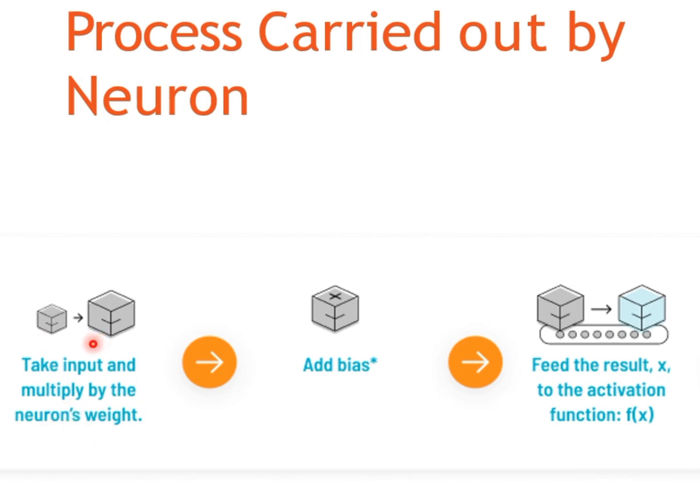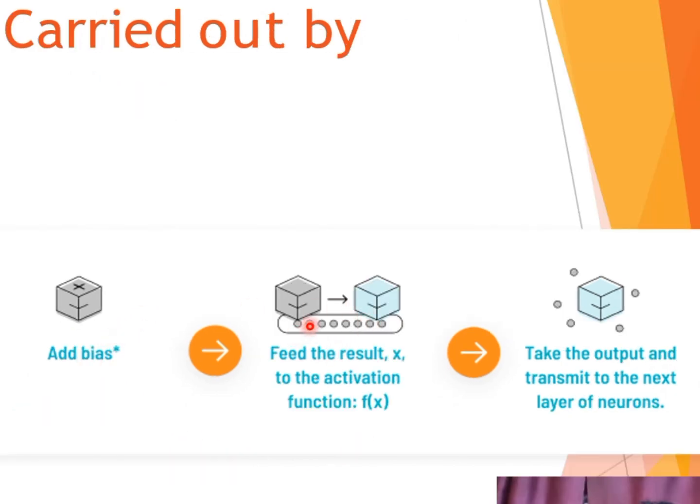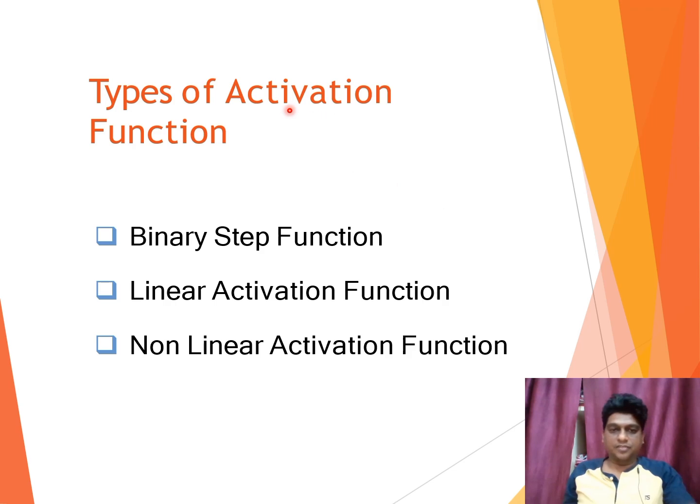Process carried out by the neuron inside the network. It takes the input and multiply that input with the weight of the neuron. Then we are adding the bias value feed forward that result to the activation function. Then it transforms the output to the next layer of neurons. Three types of activation function. One is binary step, linear activation and non-linear activation function.